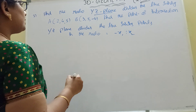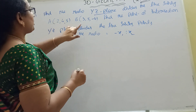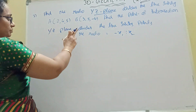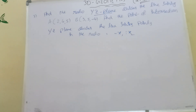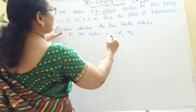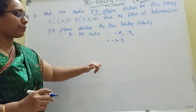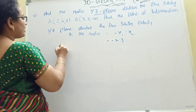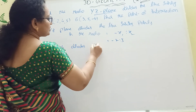The formula for YZ plane division: the ratio is minus x1 to x2. Given x1 is minus 2 and x2 is 3, ratio is minus x1 to x2 which is minus(-2) to 3, that is 2 to 3. It divides externally. Since the ratio is negative, it divides externally.